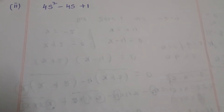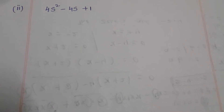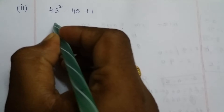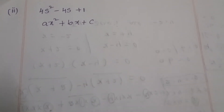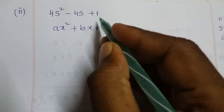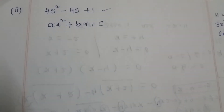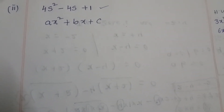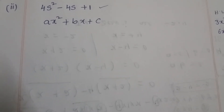To find the zeros, first check that the given quadratic expression is in standard form or not. The standard form is ax² + bx + c. Here, 4s² minus 4s plus 1 is in standard form.